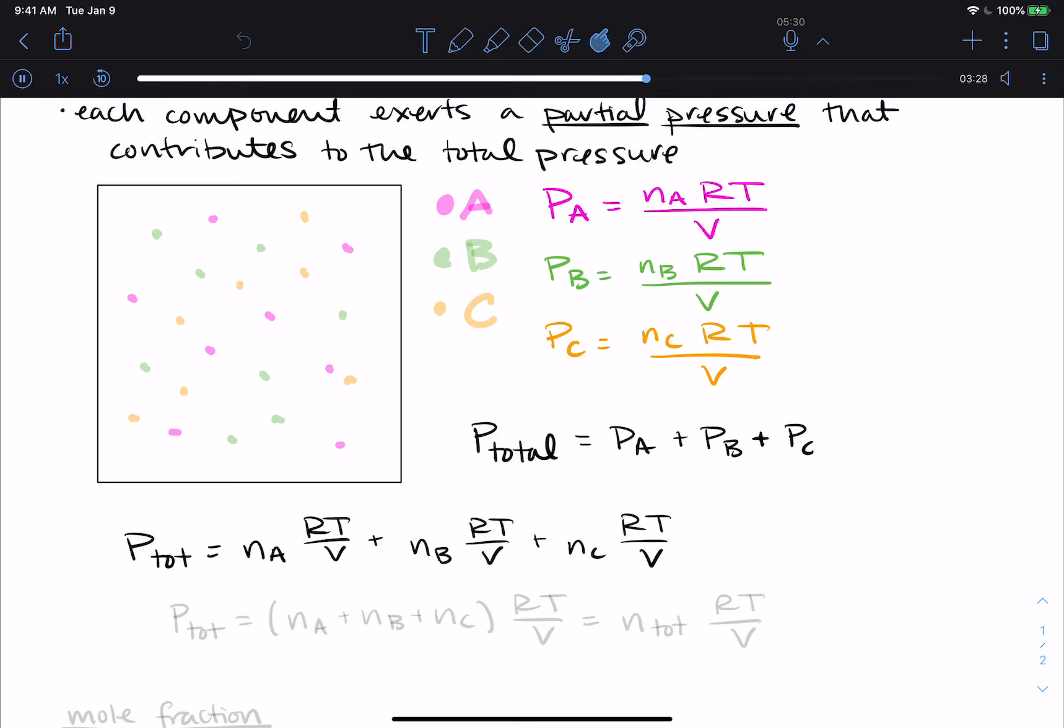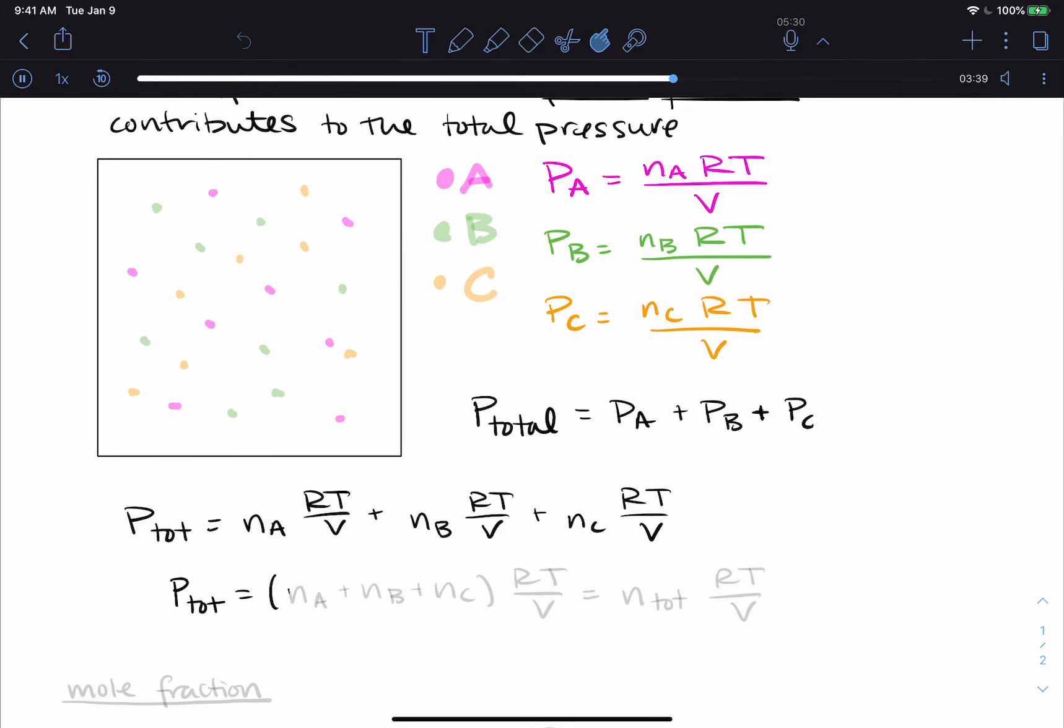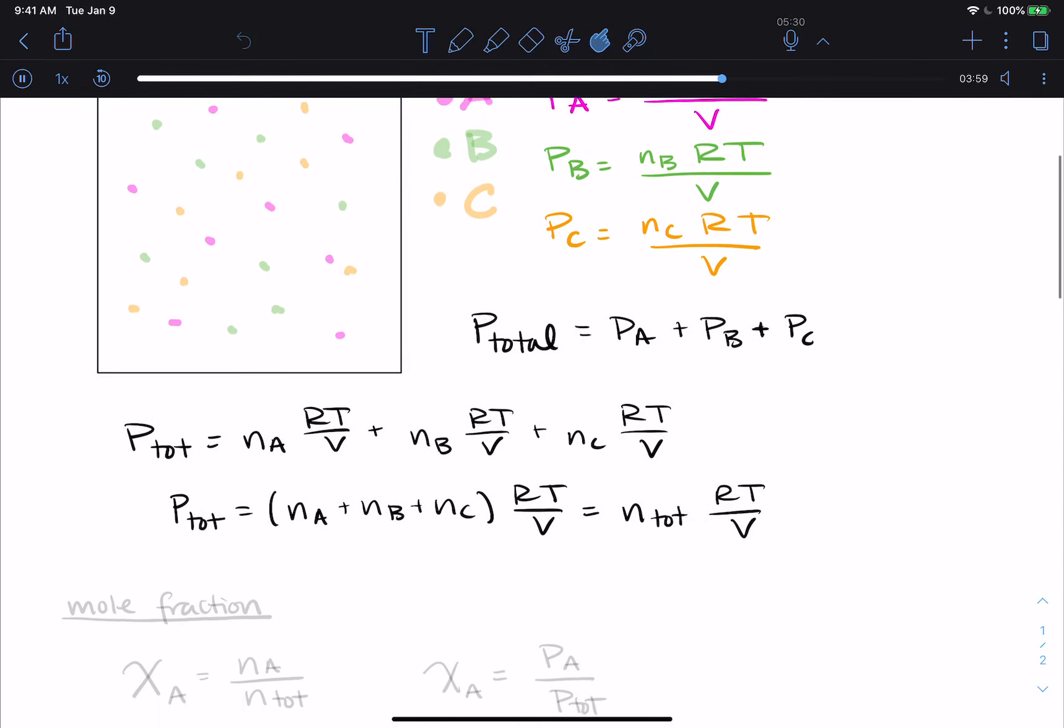And that RT over V factor is the same. So we could factor that out and also write the total pressure being equal to nA plus nB plus nC times RT over V. And another way to say that is that this is equal to n_total RT over V. So we have a number of ways to calculate the total pressure of a sample.